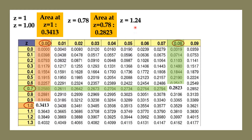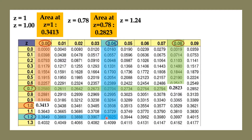How about z equals 1.24? First, locate the first two digits, 1.2, on the left column of the z-table — that is here. The third digit is 4, corresponding to 0.04, located here. Intersecting the row and column gives 0.3925, which is the area at z equals 1.24.